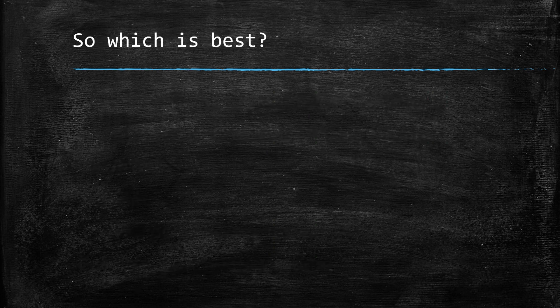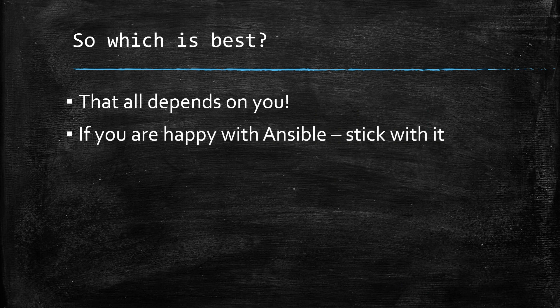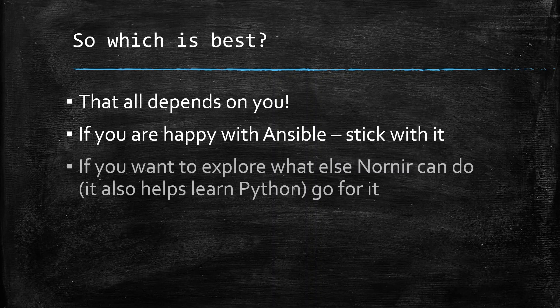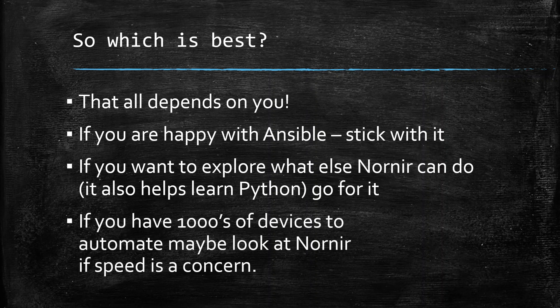So which is best? Now that really all depends on you. If you're happy using Ansible and it does what you want it to do, then stick with it. It's a great tool, it does what it says on the tin, it's perfect. If however you are struggling with Ansible and you're finding limitations with it, then I highly suggest you explore what Nornir can do, and it also helps you learn Python and go for it. And certainly if you have thousands of devices to automate, maybe you should be looking at Nornir if speed is a concern for you.